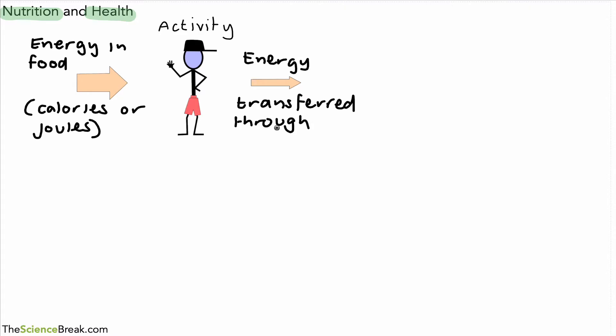So that smaller arrow shows the energy transferred through activities. If more energy is taken in than transferred through activities, what's going to happen to the person? Well, let's compare the energies. This one is high, this one is low compared to the energy going in. So what you could imagine is the person would experience weight gain over a period of time.